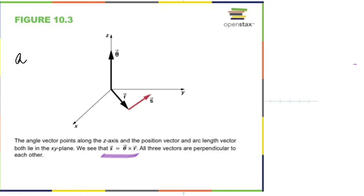If it was rotating clockwise, theta would be down. Let's try it — when I open this door, what's the direction of angle? You've got to say either up or down using the right-hand rule. It's turning that way when I open it, and the thumb is up, so angle is up. But when I close the door, it's turning backwards — angle is down.